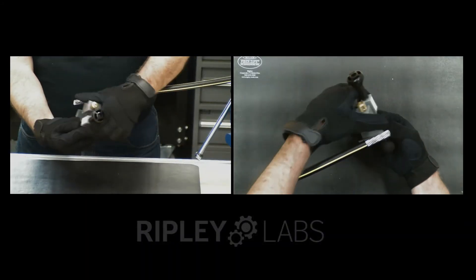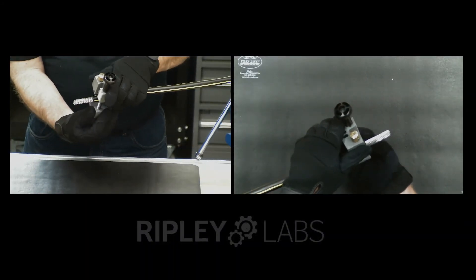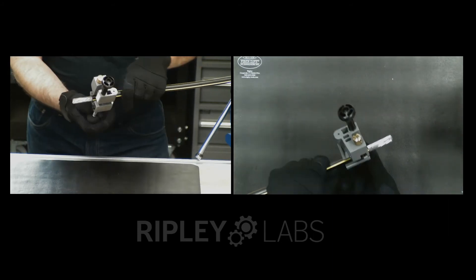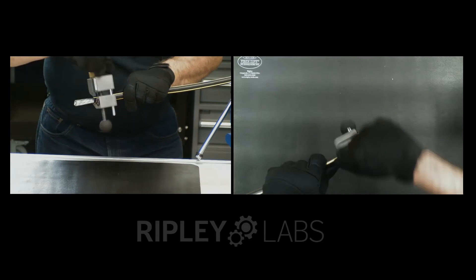The tool also excels at performing mid-span cuts. In this case we're using the same cable so the blade depth does not need to be adjusted. If it were a different thickness insulation, the blade may need to be set deeper or shallower.